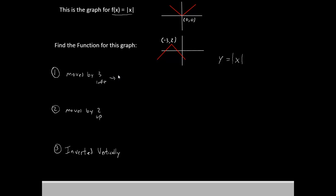Now, to move it left or right, you are going to put a number inside of those little pipes, inside of those absolute value signs. Now if your goal is to move it to the left, that number is going to be positive.